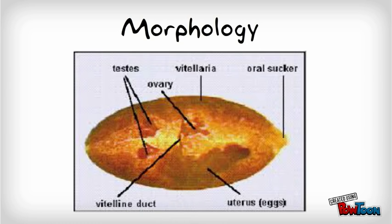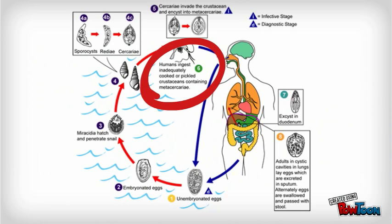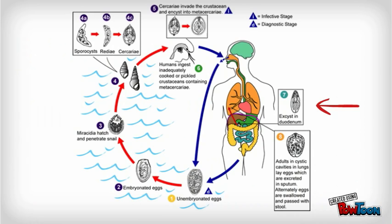Life cycle: the lung fluke infects humans and other domestic carnivores when crab meat containing encysted metacercaria is consumed. The metacercaria reach the small intestine, exit their shell, and bore their way as young flukes through the intestinal wall, through the thoracic diaphragm, and penetrate the lung, where they become enclosed in 1 by 2 cm cysts and reach maturity. Eggs are found in the sputum or, if swallowed, in the feces, 2 to 3 months after infection.